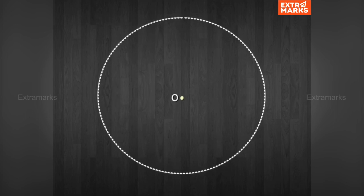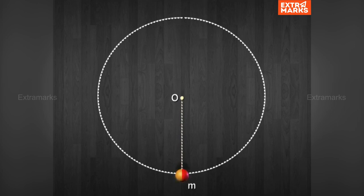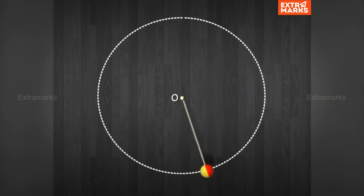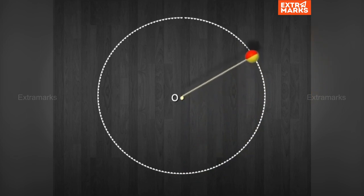The path of the object in the vertical plane is a circle. Let O be the center of the circular path of the object, and let L be the length of the string. The length of the string will be the radius of the circle. Let M be the mass of the object. Now we will divide the motion of the object into two parts.